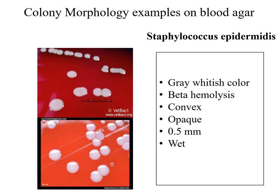Staphylococcus epidermidis has a grayish-whitish color. The colonies are smaller than Staph aureus, and are characterized by being beta-hemolytic as well. The colonies are convex, opaque, and wet.